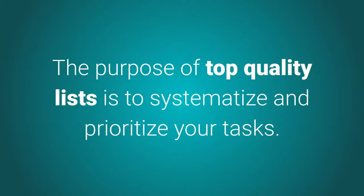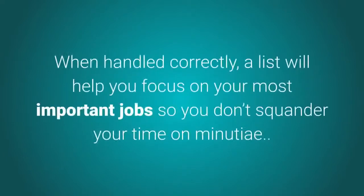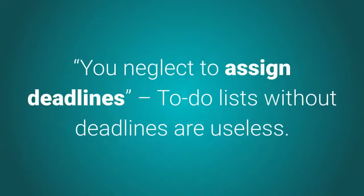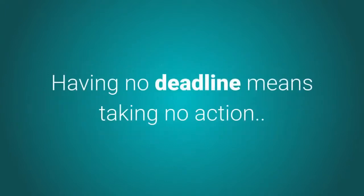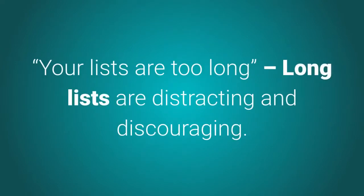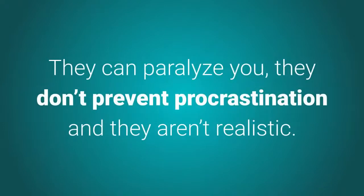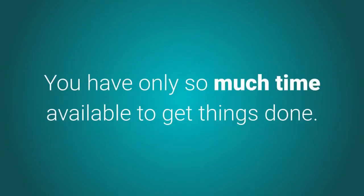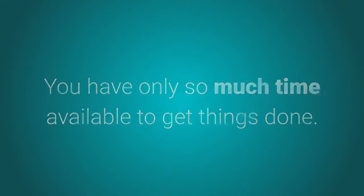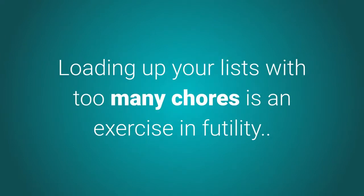The purpose of top-quality lists is to systematize and prioritize your tasks. When handled correctly, a list will help you focus on your most important jobs so you don't squander your time on minutiae. The second reason: you neglect to assign deadlines. To-do lists without deadlines are useless — having no deadline means taking no action. The third reason: your lists are too long. Long lists are distracting and discouraging; they can paralyze you, don't prevent procrastination, and aren't realistic. Loading up your lists with too many chores is an exercise in futility.